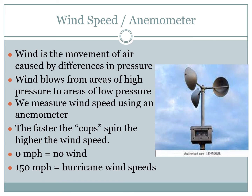The last basic tool we're going to talk about today is an anemometer — it actually measures wind speed. As wind blows harder and harder, the speed picks up, and we measure that using an anemometer. Wind is actually the movement of air caused by differences in pressure, which we measured with a barometer. Wind always blows from areas of high pressure to areas of low pressure.